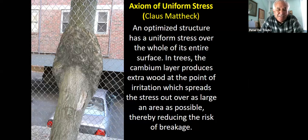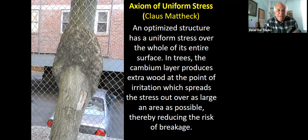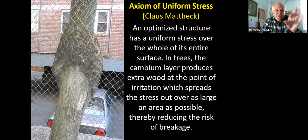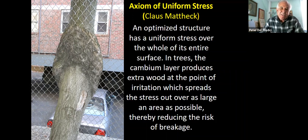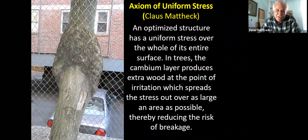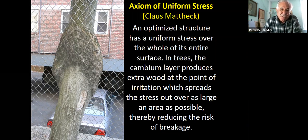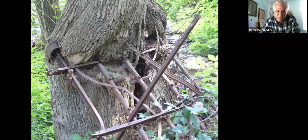The cambium layer produces extra wood at the point of irritation, which spreads the stress out over as large an area as possible, thereby reducing the risk of breakage. That ailanthus tree on the left demonstrates one of the great magic tricks trees perform — their ability to essentially grow right through a chain link fence. When the shoot is very narrow it goes through the chain link, and then as it expands it engulfs the chain link, dealing with that source of irritation by producing all this extra tissue. Trees are incredible in their ability to deal with all sorts of issues in the urban environment.